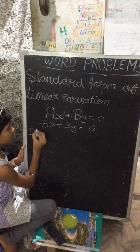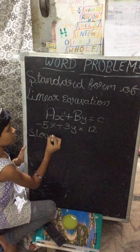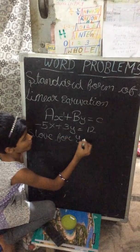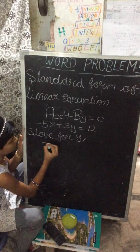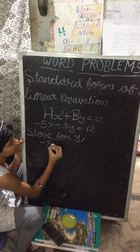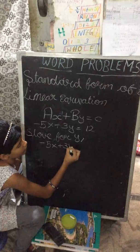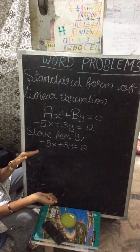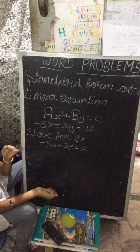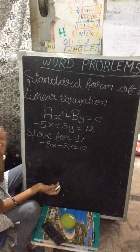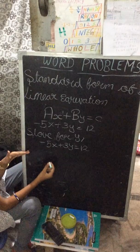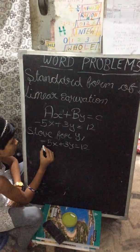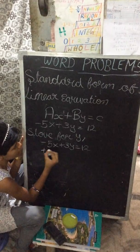Solve for y. -5x plus 3y equals 12. In this case, if you want to solve for y, we have to isolate y first. So for that, first we remove -5x. Since this is -5x, we take plus 5x.